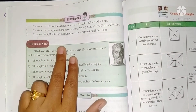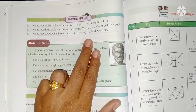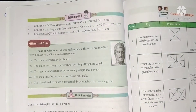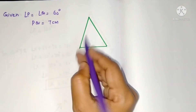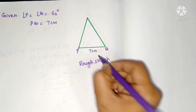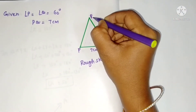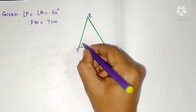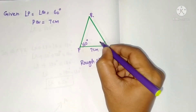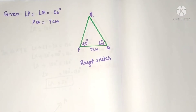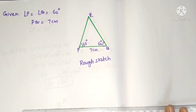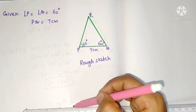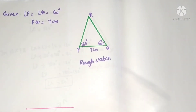Third problem: construct triangle PQR with angle P equals angle Q equals 60 degrees and PQ equals 7 centimeters. Draw a rough sketch — PQ equals 7 centimeters and the third vertex will be R. Angle P is 60 degrees and angle Q is also 60 degrees. Now take the scale and draw a line segment of 7 centimeters. Put one point at 0 and another point at 7, then join them. This is PQ, 7 centimeters.